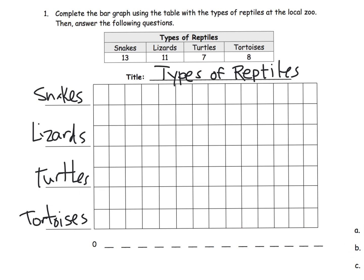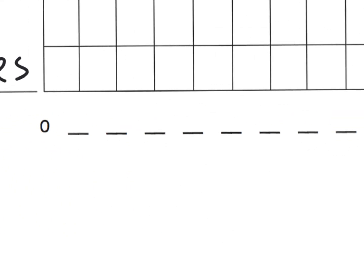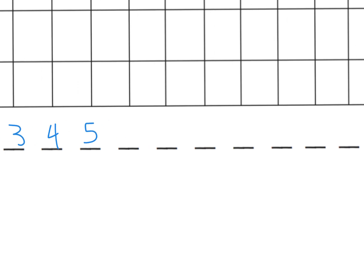Ignore the A and B down there — those are questions we'll answer at the end. So we need to label. I'm going to make that a little bit larger. We go one, two, three, four, five. Notice that the number is directly underneath the line — the number is not in the space, it's representing the line, because that's the important thing.